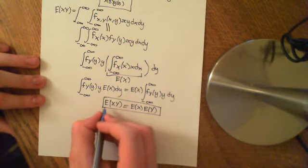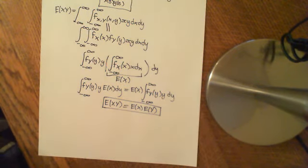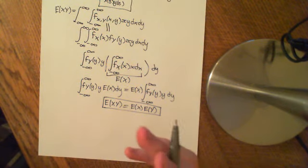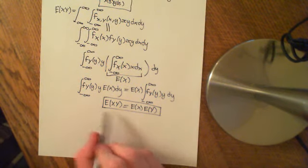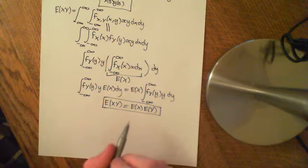This result that we needed in our discussion of moment-generating functions follows from two-dimensional LOTUS. We haven't proven two-dimensional LOTUS itself — we've given good intuition as to why it's true — but if two-dimensional LOTUS holds, then this result follows straight away.